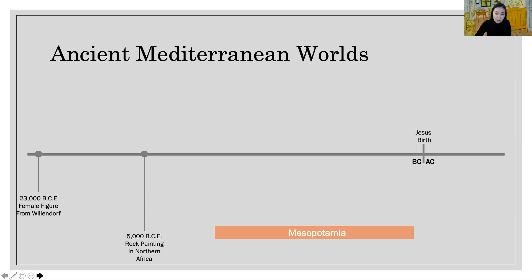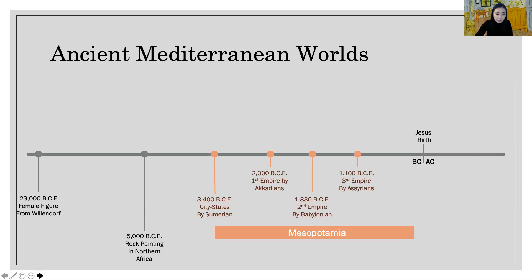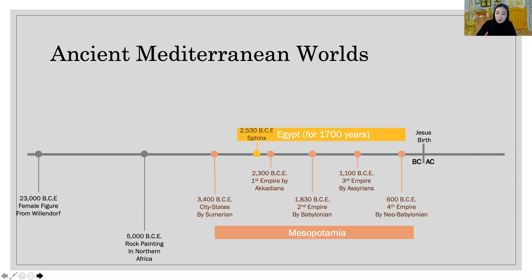Mesopotamia arose about 2,000 years before the common era, and this area was highly desirable, so many empires were built and disappeared — Sumer, Akkad, Babylon, Assyria, and Babylon again. On the other hand, Egypt continued as one empire for 1,700 years, parallel with Mesopotamia's time period.